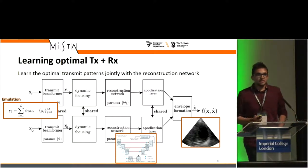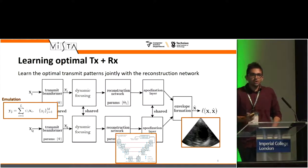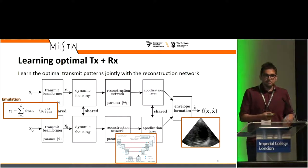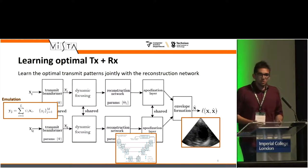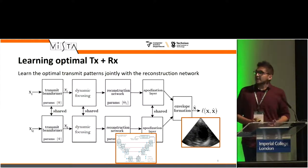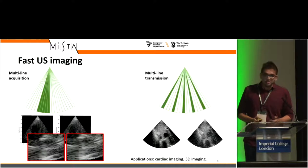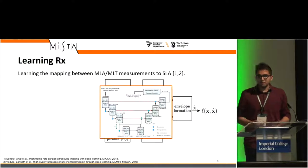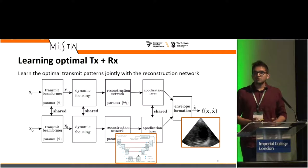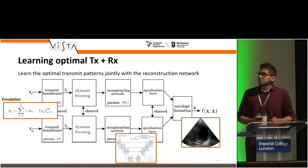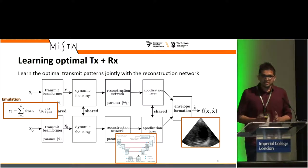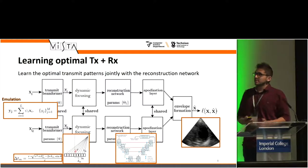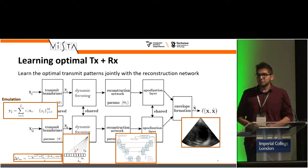The question we ask ourselves is: we have these standard methods to do fast ultrasound imaging, but what is the optimal thing to do? MLA and MLT that I showed you are just an arbitrary choice. In this work, what we try to do is find the optimal beam pattern to use to reconstruct the SLA image, and at the same time achieve better quality.